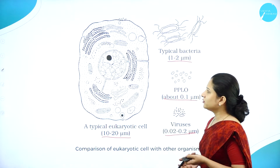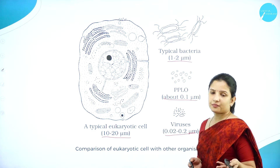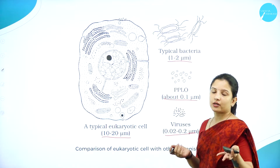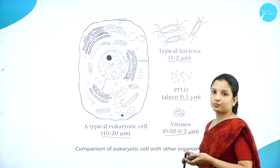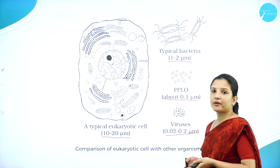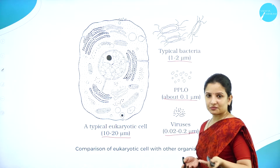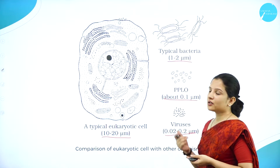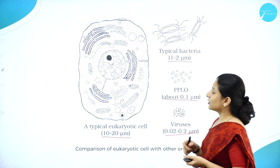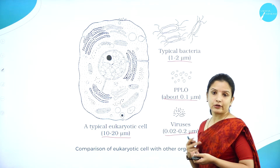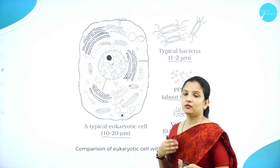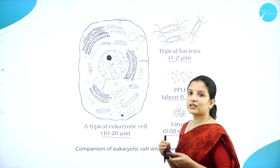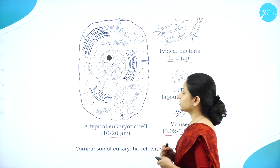A typical eukaryotic cell, be it a plant cell or animal cell, is very large — you can see it under just 4x magnification. But prokaryotic cells cannot be observed at very low magnifications because they are very, very tiny and minute.